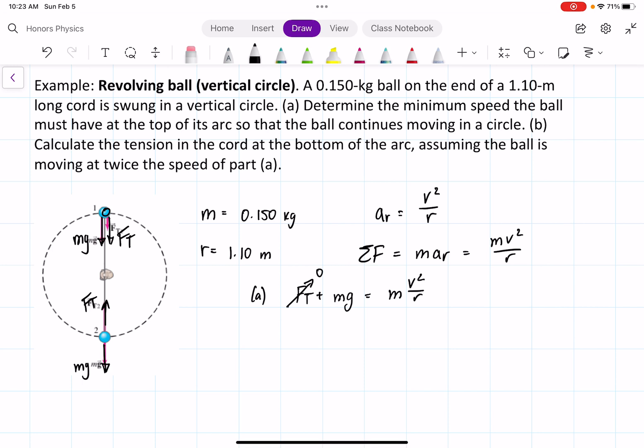So if we do that, we also notice that the M's are going to cancel on both sides. So if we solve for V, we get V squared is equal to GR, which means that V is equal to the square root of GR. And if we just plug in square root of 1.1 times 9.8.